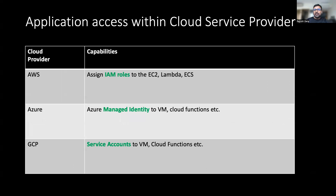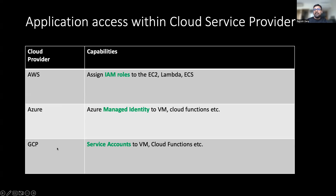Then comes the applications. If applications sitting within your cloud provider want access to other applications or services, here's how you do it. In AWS, if your applications are running on EC2, Lambda, ECS, EKS, or wherever, you can simply assign IAM roles, and with those IAM roles these entities will get the desired permissions. On Microsoft Azure, you create a managed identity and assign it to your virtual machine, cloud functions, and so on. In GCP, you create a service account and assign it to your virtual machine, cloud functions, containers, and so on.